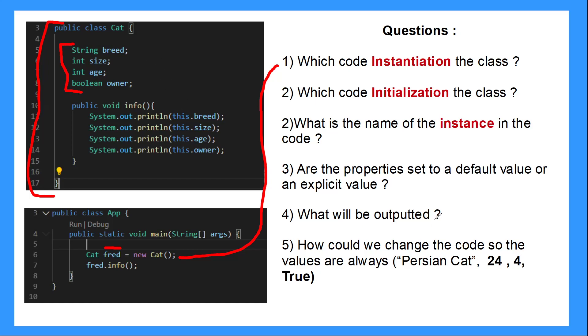So for example, what will be outputted here? Because we've got this method here that says void, which is called down here. So the breed, the default value will be null. The default value of a string is null. The default value of an integer is zero, hence that would be zero. And the default value of boolean is false. So this information will be printed.